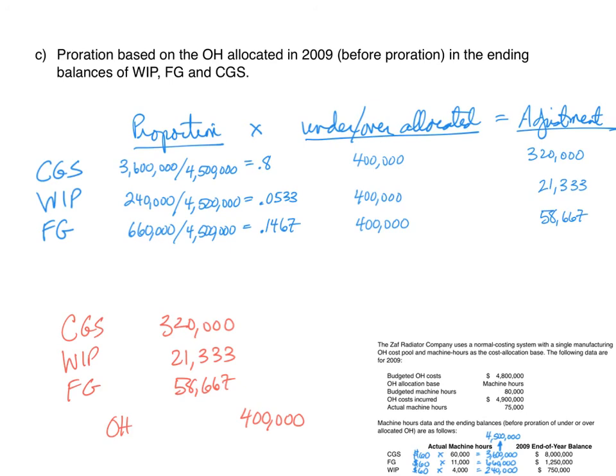These are the three methods used for closing out any balance in the overhead T-account.